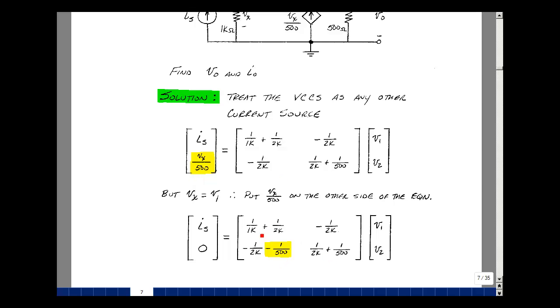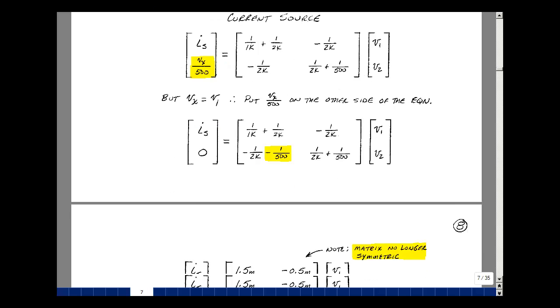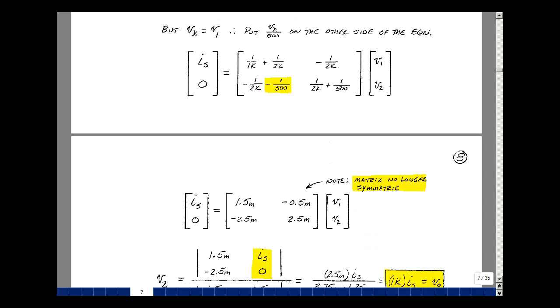Since every dependent source depends on some voltage or current in your circuit, and you can find any voltage or any current in terms of the node voltages, you can always do this substitution and then put the controlling term on the other side of the equation. Now, what I've got is a matrix that's no longer symmetric. I have the diagonal terms that are positive, but now my off diagonals aren't the same. This is one of the characteristics of an active circuit.